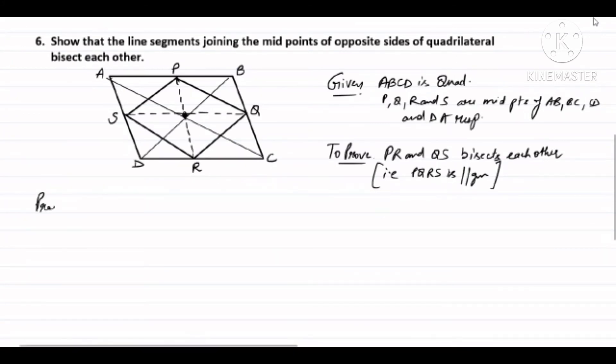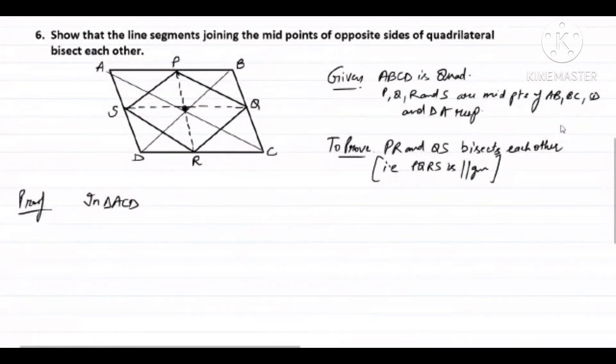Now see, in triangle ACD, R and S are midpoints of CD and DA respectively. Therefore, by midpoint theorem, RS is parallel to AC. Let's call this number one.